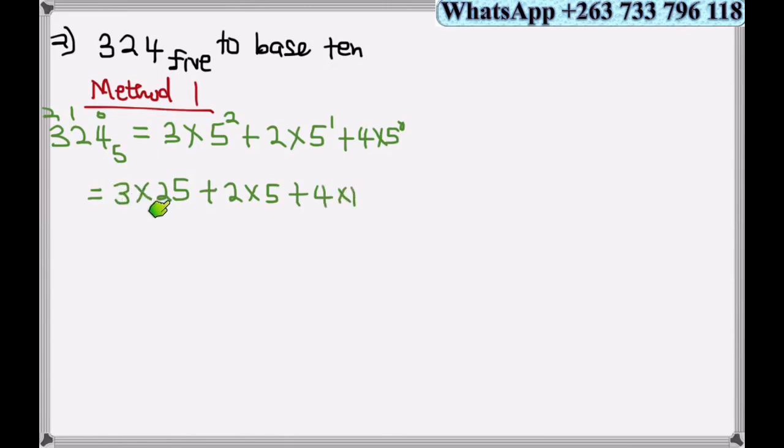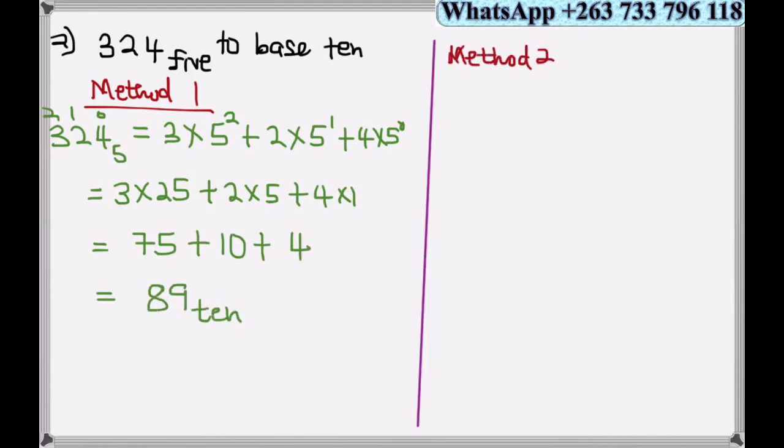This will be 3 times 25 (since 5 squared is 25) plus 2 times 5 plus 4 times 1. So this equals 75 plus 10 plus 4, which is 89 base 10.